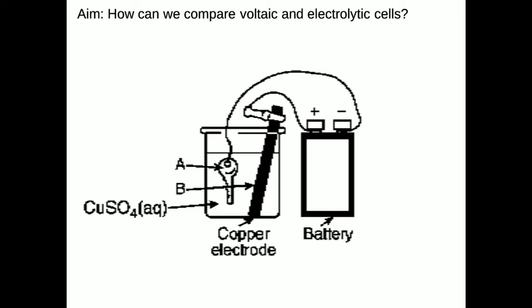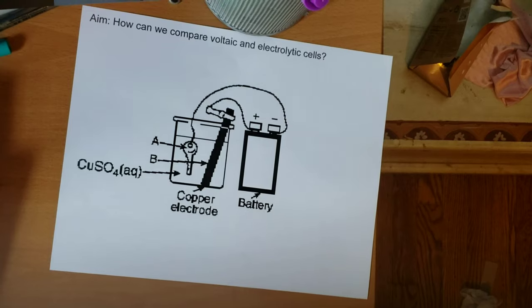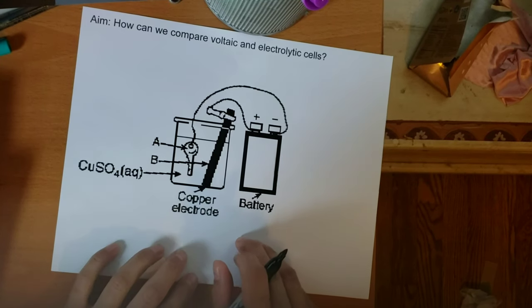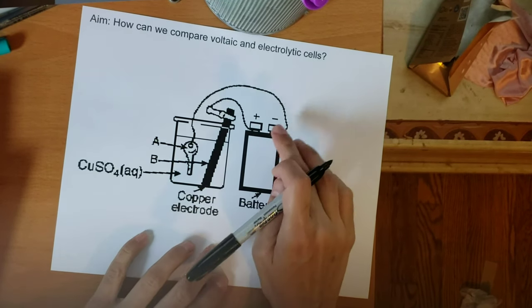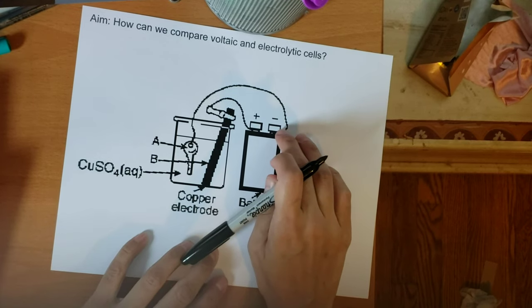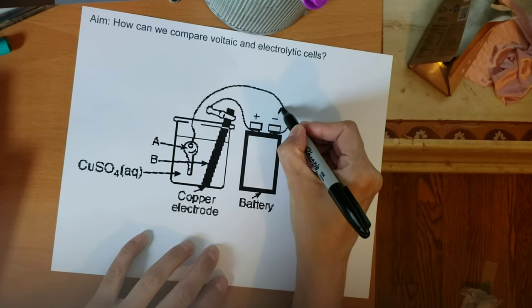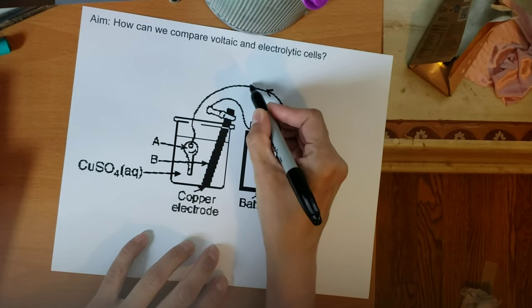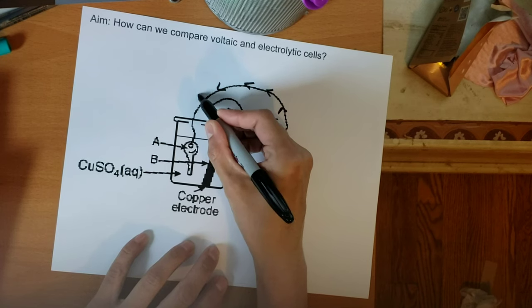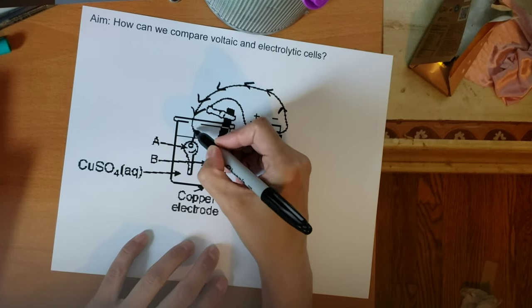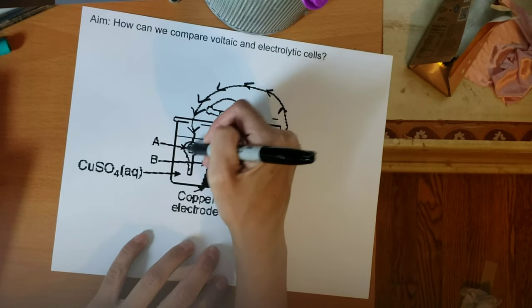Now let's describe the workings of this electrolytic cell. We can tell it's an electrolytic cell because there is only one beaker and there's a battery. Let's look at another practice question together. We start at the battery — negative electrons come out of the negative terminal of the battery. Electrons are going to flow out of the negative terminal this way. Again, this is a forced reaction — it's forced by the battery.